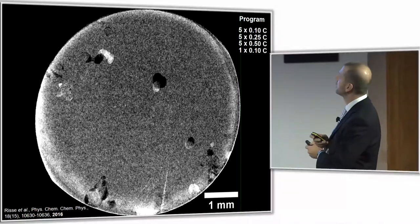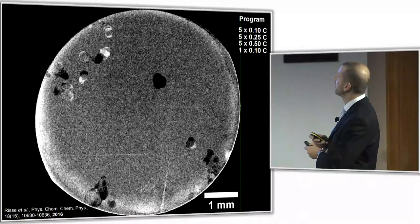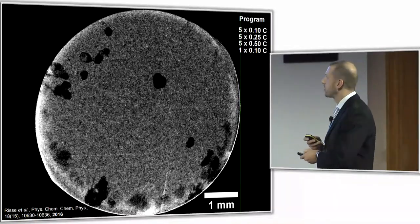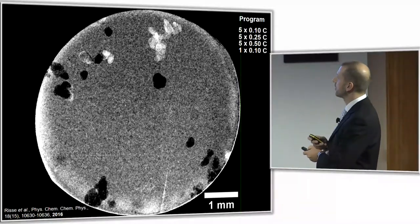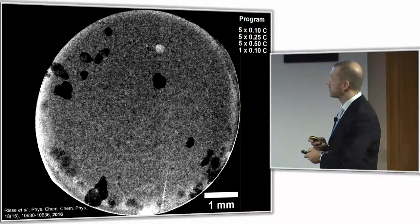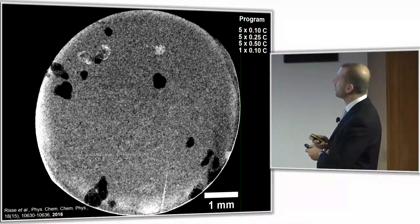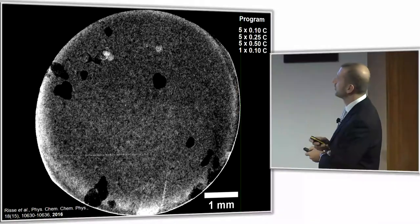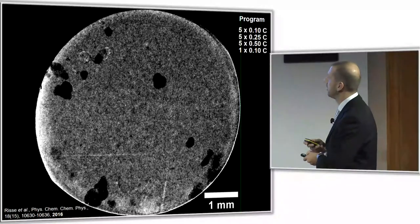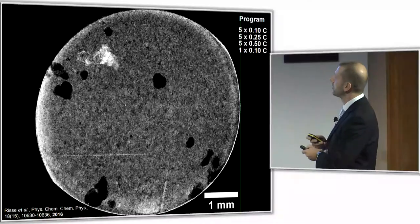We perform five cycles at 0.1C and five at C/4, C/2, and then again one cycle at C/10. What you can see is the formation of macroscopic phases — very dark spikes and dendrites. This is beta-sulfur. At the end of the discharge you can see a ring forming from the outside, because that is the source of the lithium, and you see this ring forming at the end of every discharge.